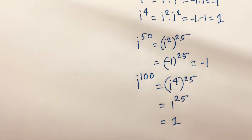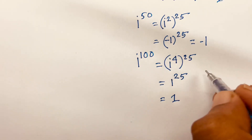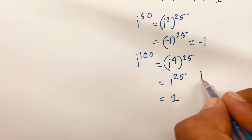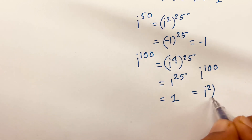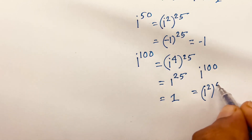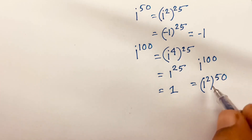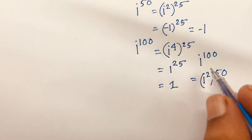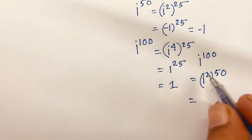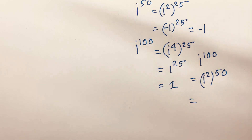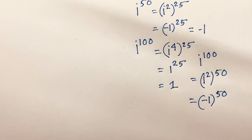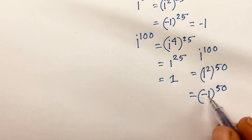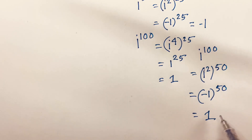Now I solve i to the power 100 using another method: i^100 equals (i²)^50, because 2 times 50 equals 100. Since i² = -1, this becomes (-1)^50. Since 50 is an even number, (-1)^50 equals positive 1.